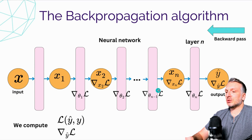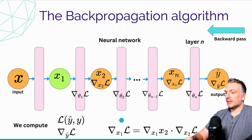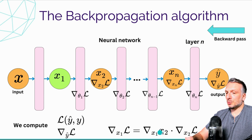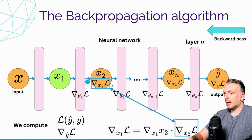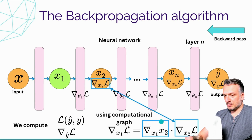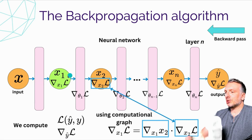Assuming we've stored gradients at all layers and nodes up to x2, we now compute the gradient for x1. The gradient of the loss with respect to x1 equals the gradient of x2 with respect to x1 — the output of the block with respect to its input — times the gradient of the loss with respect to x2, which is already computed and stored in the previous node. Using the simple computational graph, I compute the gradient of the output with respect to the input, multiply them together, and store the gradient at x1.